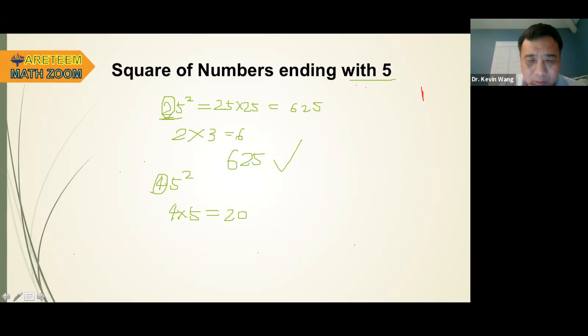So you always attach a 25 at the end. Now, let's try another one. 35 squared. So now do this method again. And I'll let you guys do it next. So 3, take the 3. 3 times the next number is 4. That's 12. 12, 25. So do you get it?